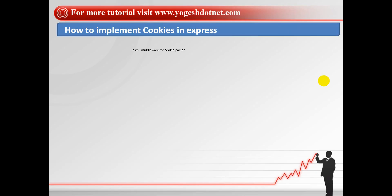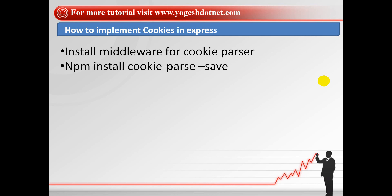Now we use cookies to implement things. The cookies are implemented using the cookie parser. You have to install it first. You can use the npm package manager to install it. The command is: npm install cookie-parser --save. After this, the package.json will also be updated and the cookie parser will be saved.